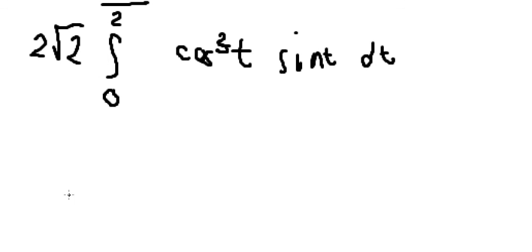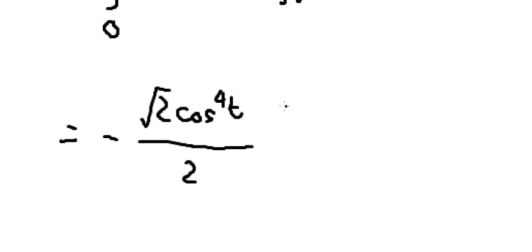And we got the final answer that should be about negative cos t to the power of 4, square root of number 2 over number 2, and we have the boundary from 0 to π/2.